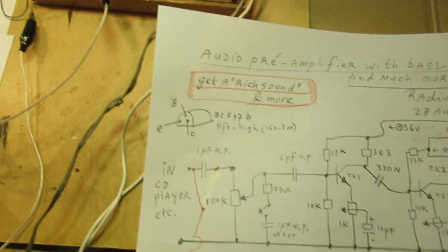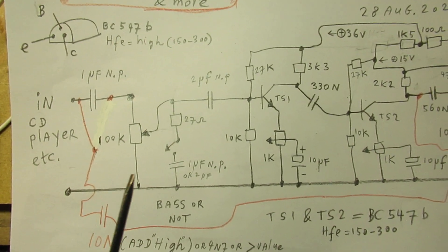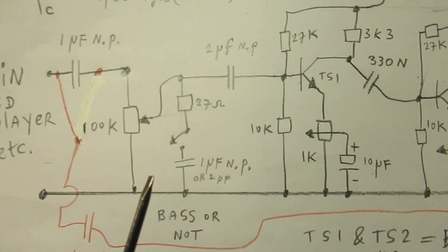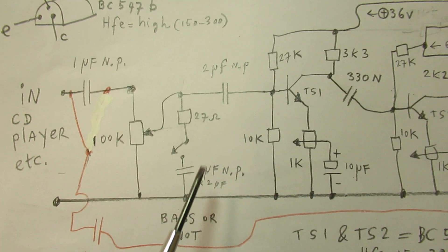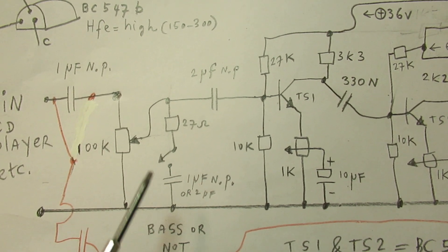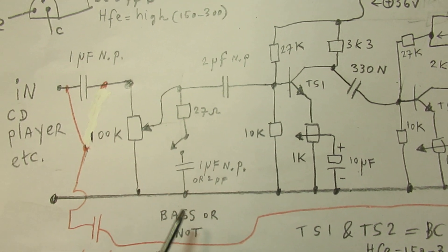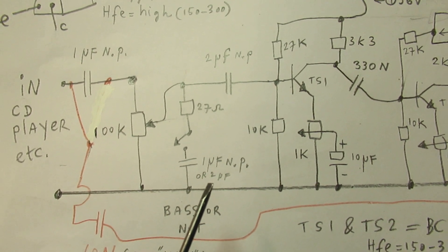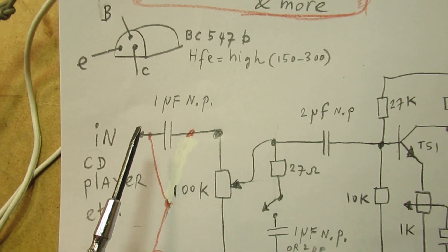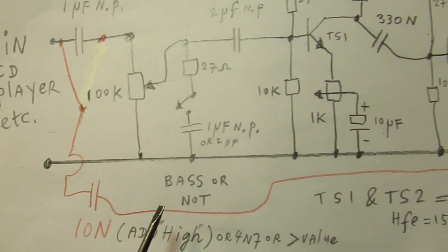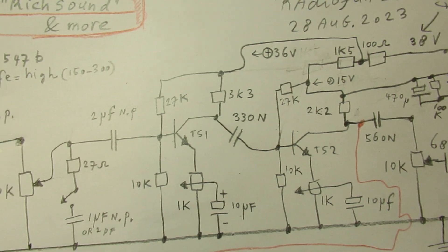So here is the schematic, perhaps that's more clear what happens in this circuit. Here is that one microfarad non-polar capacitor that switches all the high frequencies off. When you connect a capacitor parallel to an audio line to ground, all the higher frequencies are pressed down. But we add all the high frequencies here again via a 10 nanofarad capacitor that goes to the output of the two-stage amplifier.